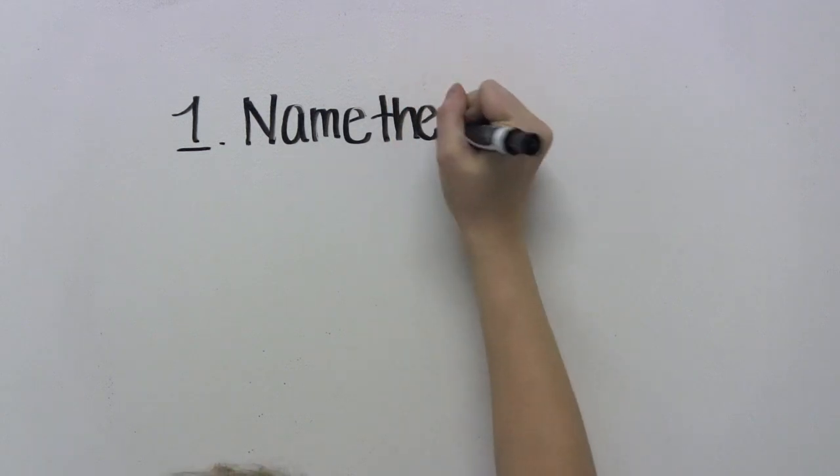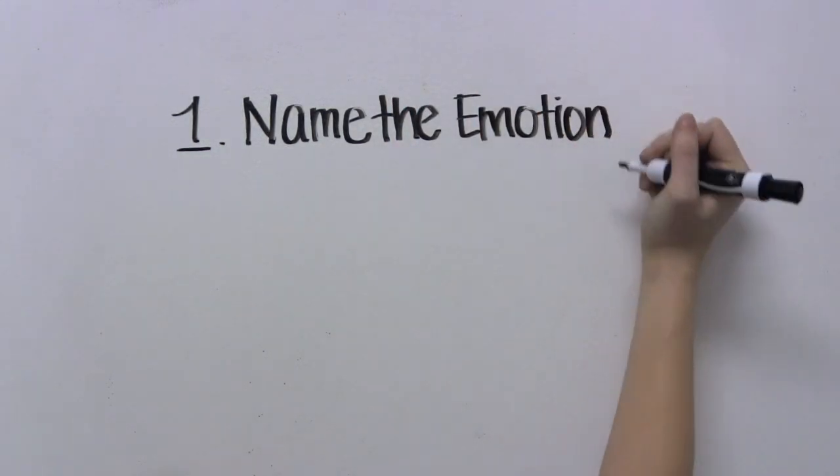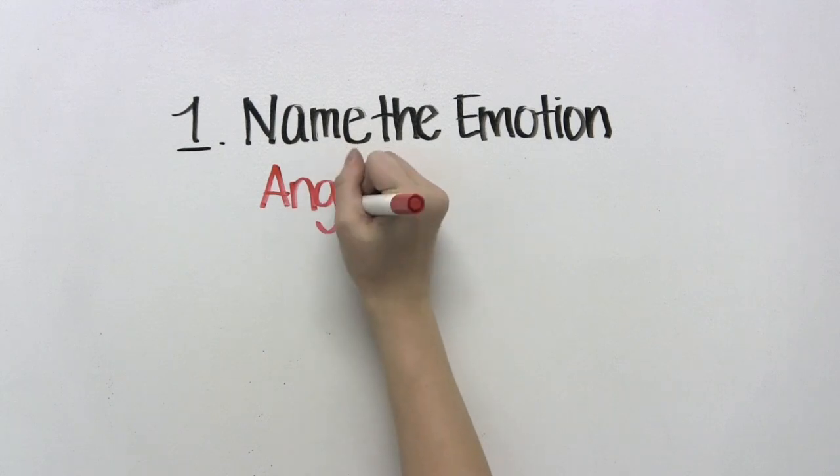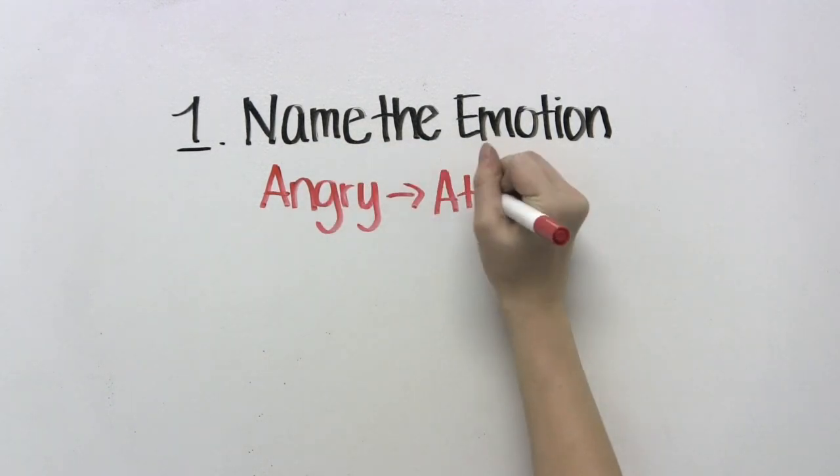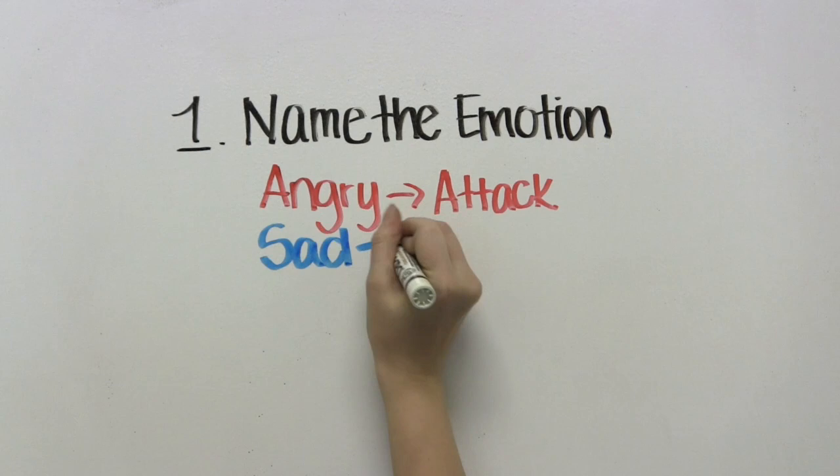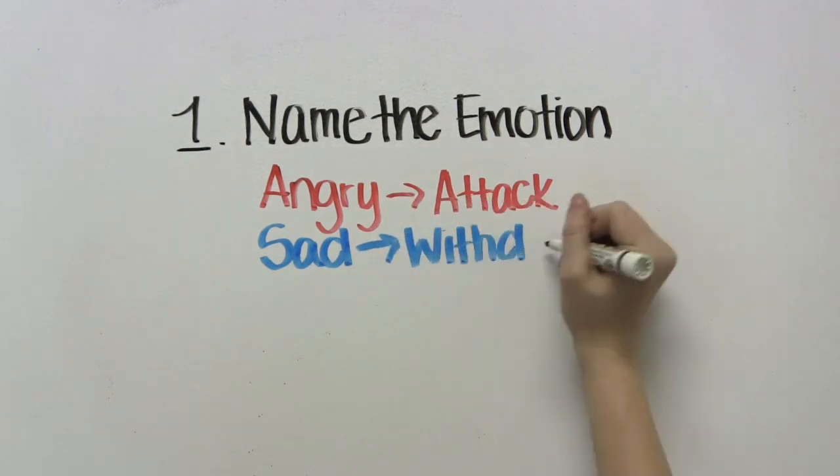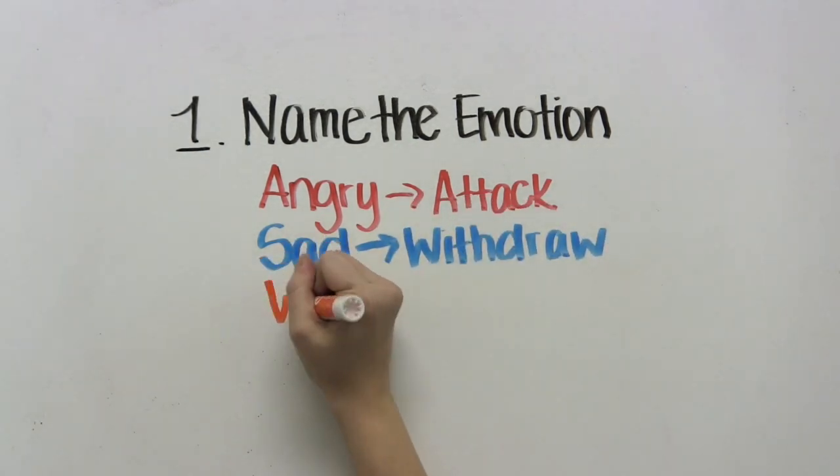Each emotion has an action urge to match. For example, when you're angry, the action urge is to attack. When you're sad, the action urge is to withdraw from people and activities. And when you're worried, the action urge is to run away and hide.